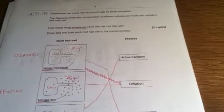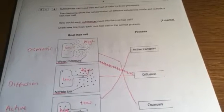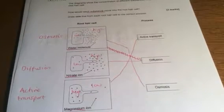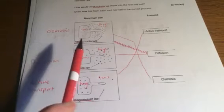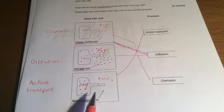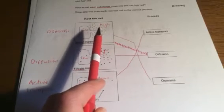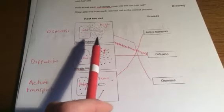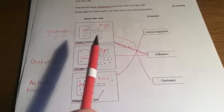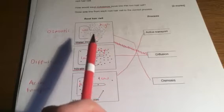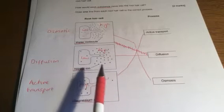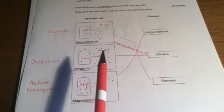Substances can move into and out of cells by three processes. The diagram shows the concentration of different substances inside and outside a root hair cell. How would each substance move into the root hair cell? Draw one line from each root hair cell to the correct process. So here, what we have to look at is they're telling us it's talking about water here, nitrate here, and magnesium here. You'll see I've scribbled all over the diagrams. There's a high concentration, lots of dots of water molecules outside here. We know anyway that water only moves by osmosis, so we could have probably guessed osmosis there. But we know that water also moves from a high concentration of water to a low concentration of water by osmosis. Here again, I've looked for where my high and low concentration are. So here to go into the cell it's going from high to low.